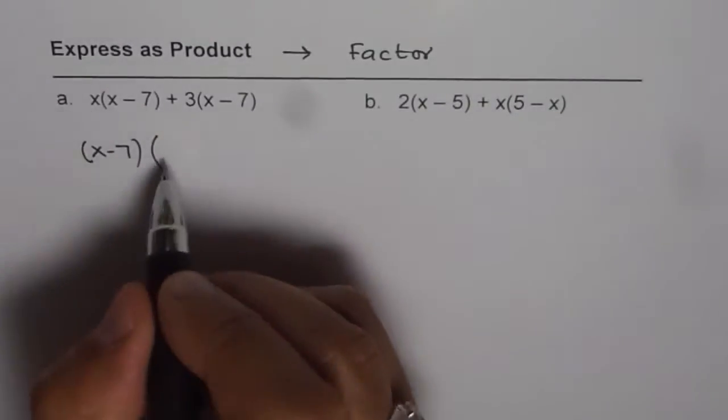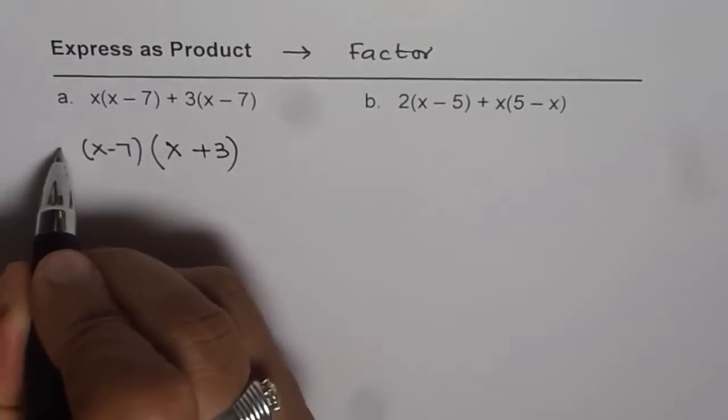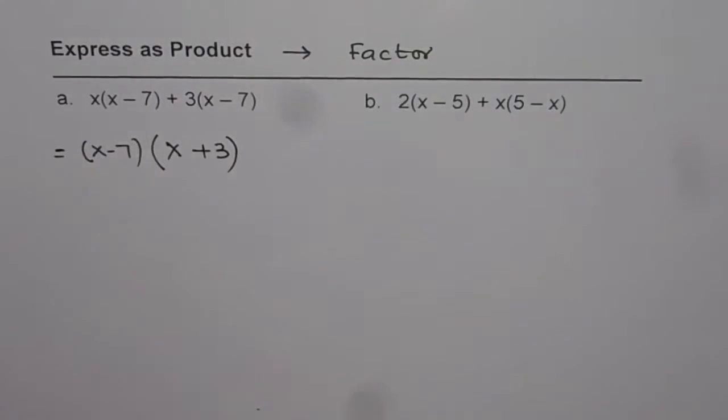So in the first term, we get x and from the second term, we get plus 3. So that is how we can write the given expression in the factored form.